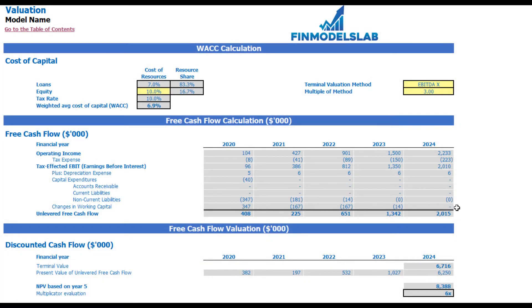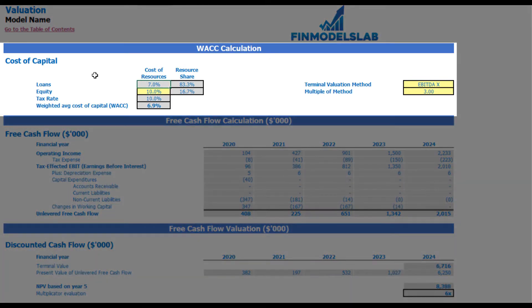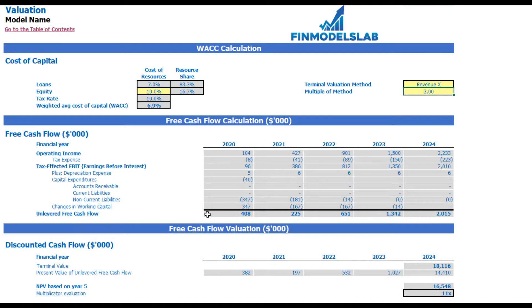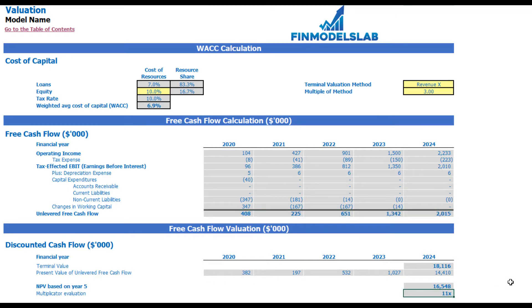On the valuation tab, you can see the company valuation calculation based on the cost of equity you input, and the cost of loans previously entered on the dashboard. You can see the equity share calculation, tax rate, and weighted average cost of capital (WACC). The valuation model offers two methods: EBITDA multiple and revenue multiple. You select one, input the multiple, and the model calculates the terminal value, present value of unlevered free cash flow (NPV), and the resulting valuation for the company.